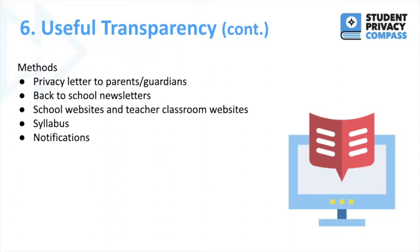When thinking about what needs to be communicated to students and families and how, it's important to think about what will be useful. For example, dozens of notifications to parents about all the different tools might not be useful, as parents might not read all of those — versus a letter at the beginning of the year that shows a comprehensive list of what tools will be used. Also, a statement on the website that simply says 'we will comply with FERPA to protect your student privacy' might not be meaningful to families versus specific privacy commitments that the school or teachers are making.